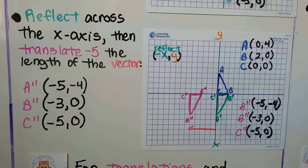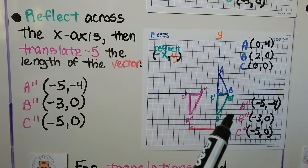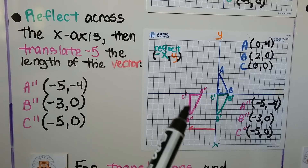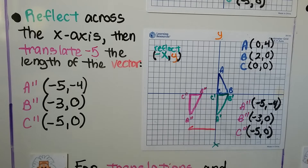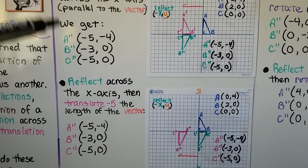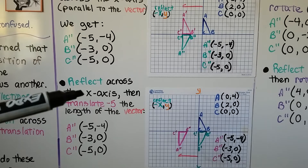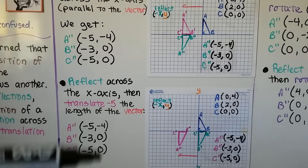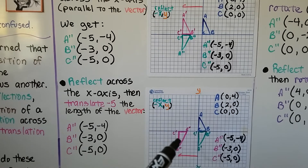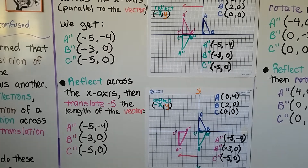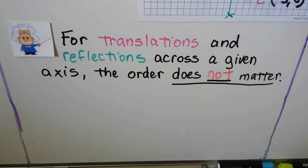Now we're going to do it the other way around. We're going to reflect across the x-axis first, which gives us the green one, then translate negative 5, the length of the vector, to get the pink one. We end up with the same ordered pairs for A double prime, B double prime, and C double prime. Whether we translated then reflected, or reflected and then translated, we get the same ordered pairs for our final image — both in quadrant 3 at the same location. So for translations and reflections, like these glide reflections across a given axis, the order does not matter.